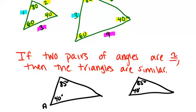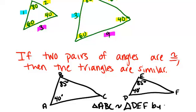And the way you would write that is if you have your triangles labeled, you would say triangle ABC is similar, that's the symbol for similar, to triangle DEF by AA similarity.